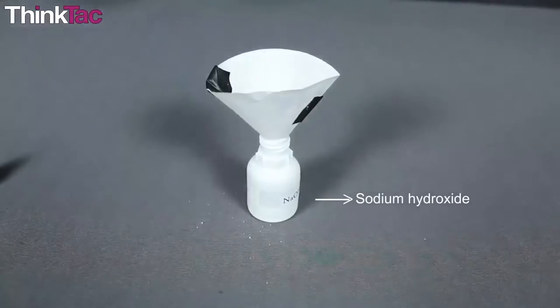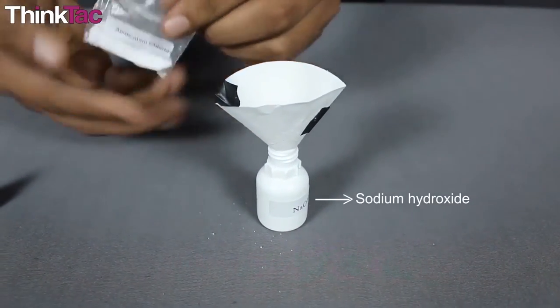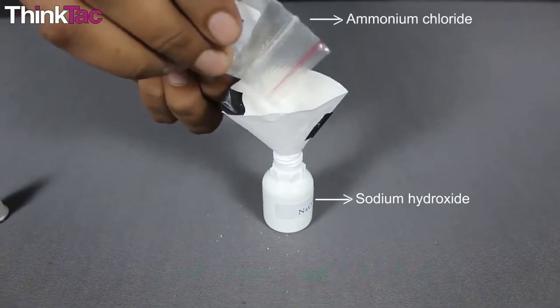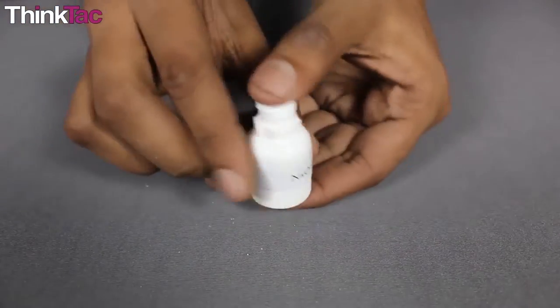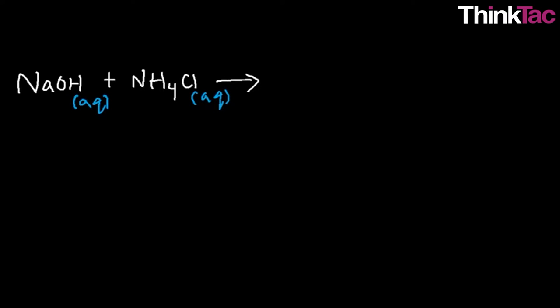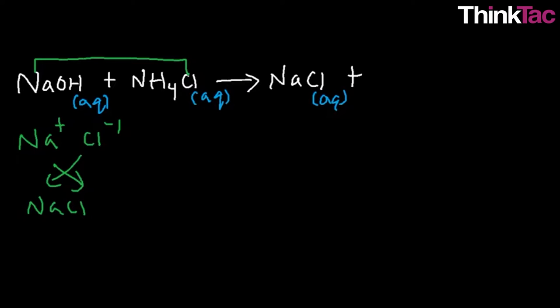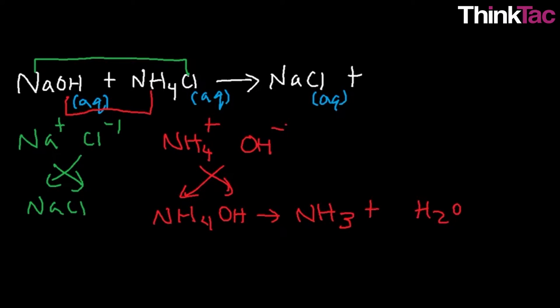The activity you have performed today deals with this chemical reaction. It is basically a reaction which gives rise to new substances that are completely different from the original ones. For example, the chemicals that you mixed today are sodium hydroxide and ammonium chloride to get sodium chloride and ammonia gas as well as water.